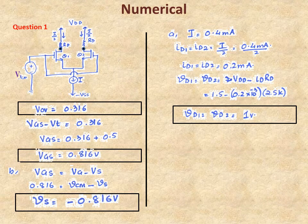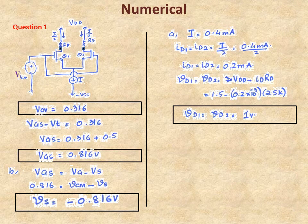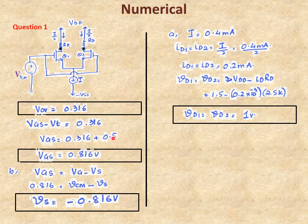VOV is basically VGS minus VT. Once VOV value is available, expand VGS minus VT and take VT to the other side. VOV value was 0.316. Add threshold voltage value given in the question to get the VGS value.